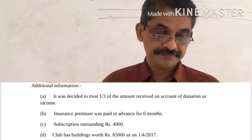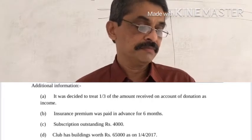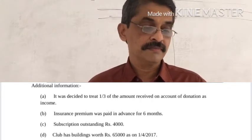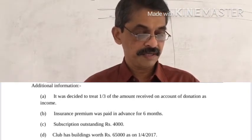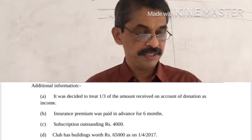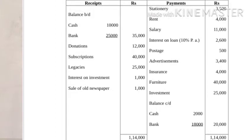Now we will talk about the opening cash balance, bank balance, and opening balance sheet. Regarding the donation adjustment: one-third of Rs. 12,000 will be treated as income in the Income and Expenditure account, and two-thirds will go to the balance sheet. The legacy is not in the Income and Expenditure account — it goes to the balance sheet.